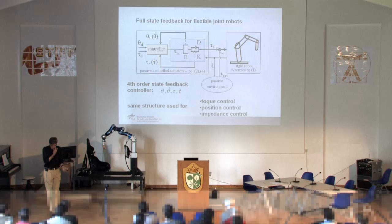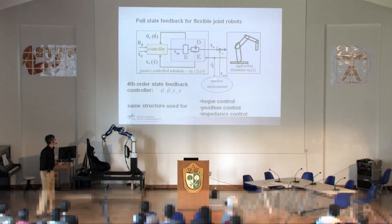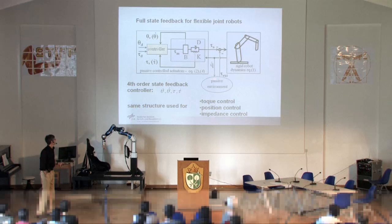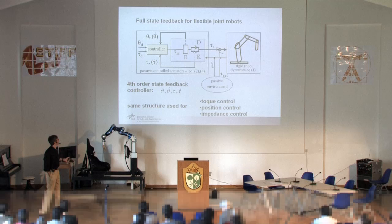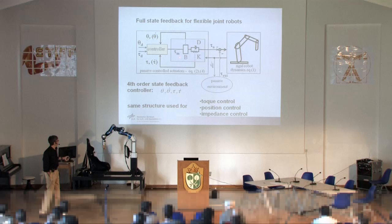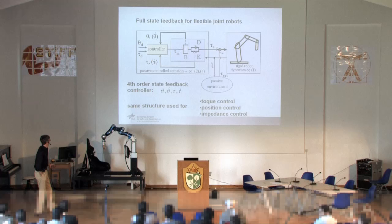We are using the passivity formalism, because if you are taking into account the flexibilities, you can stay within the passivity formalism and still solve many problems. Just look at the rigid body dynamics — the robot is contacting a passive environment, which is passive. Then you have the actuator dynamics given by an inertia, damper, and spring. We designed this fourth-order state feedback controller such that the interconnection of the controller with the motor dynamics provides a passive system by itself. By interconnecting passive systems, you provide overall stability and can make convergence analysis based on that.